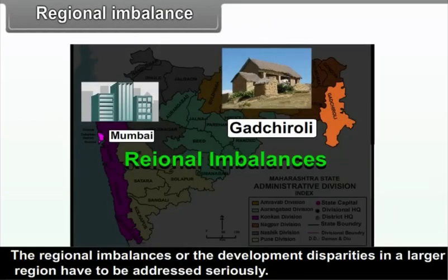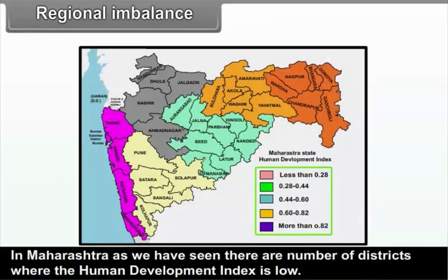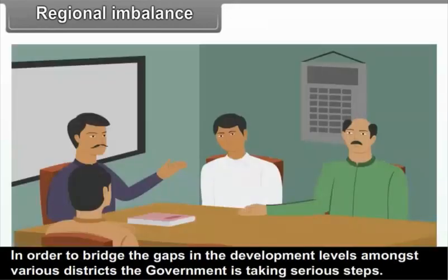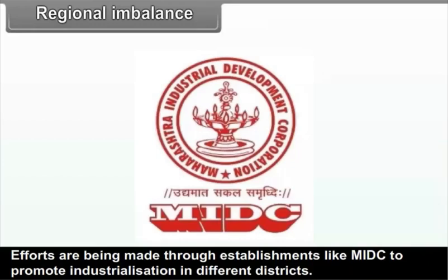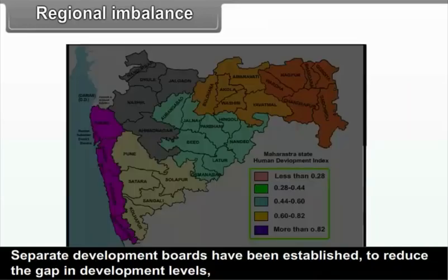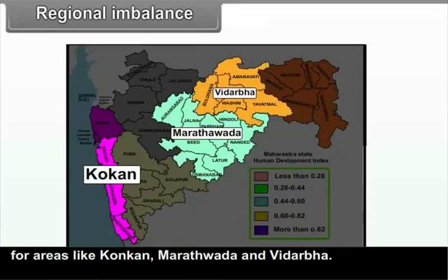Regional imbalances and developmental disparities in a larger region have to be addressed seriously. In Maharashtra, there are a number of districts where the Human Development Index is low. To bridge the gaps in developmental levels amongst various districts, the government is taking serious steps. Efforts are being made through establishments like MIDC to promote industrialization in different districts. Separate development boards have been established for areas like Konkan, Marathwada and Vidarbha to reduce the gap in development levels.